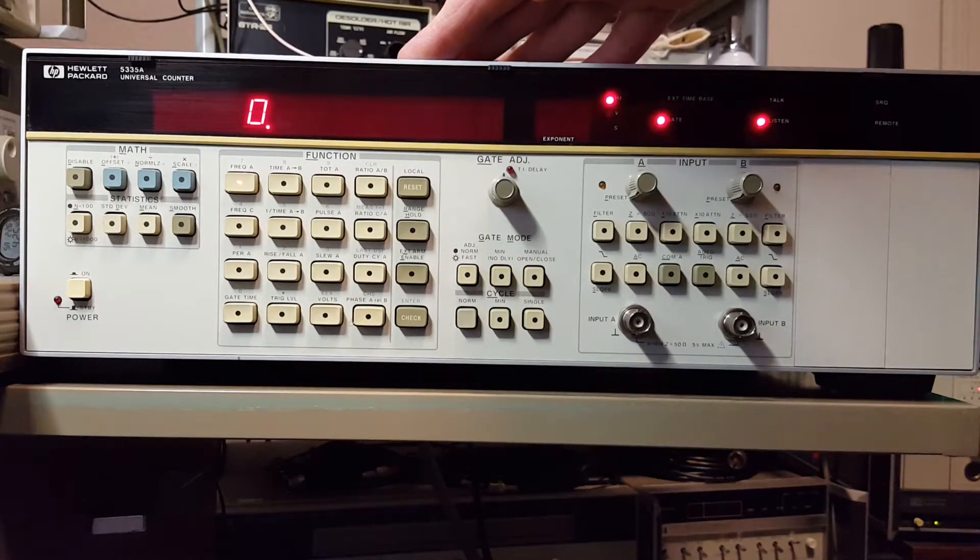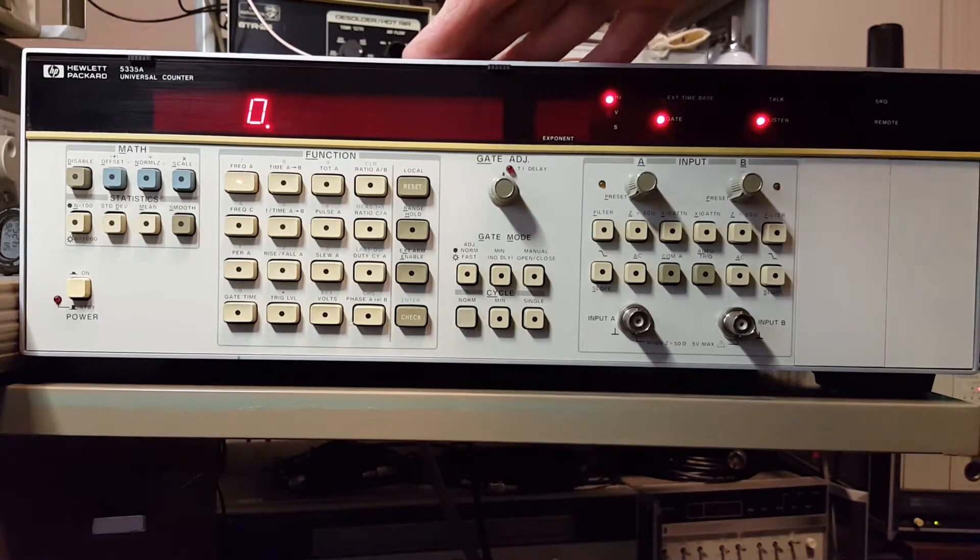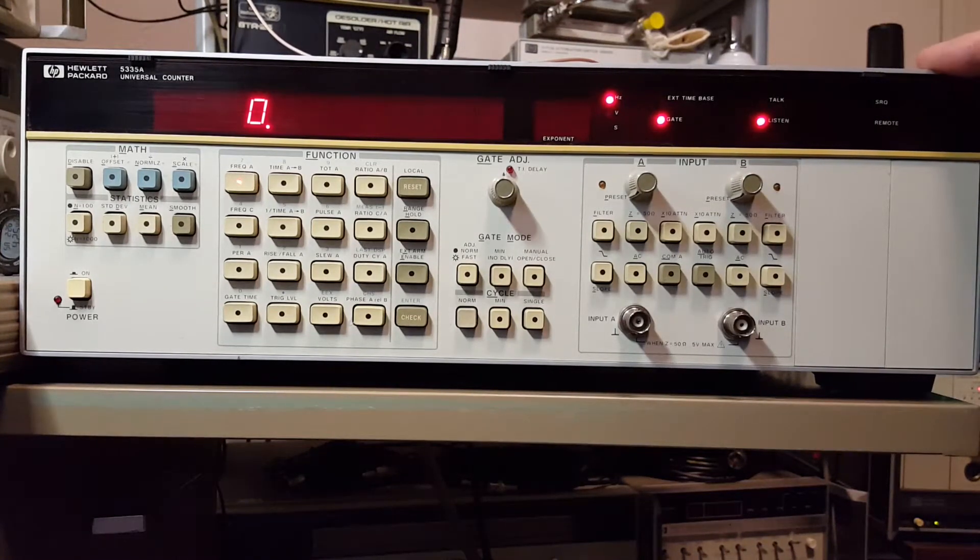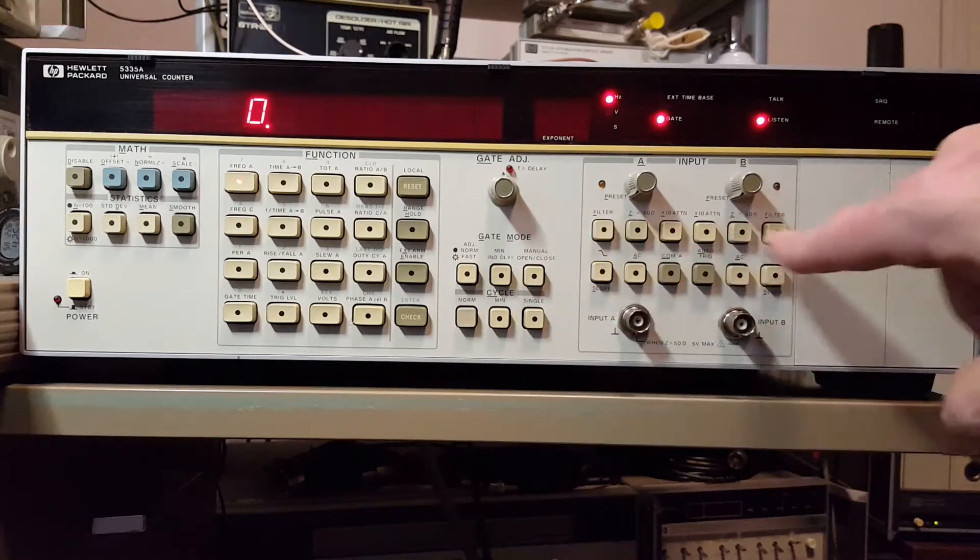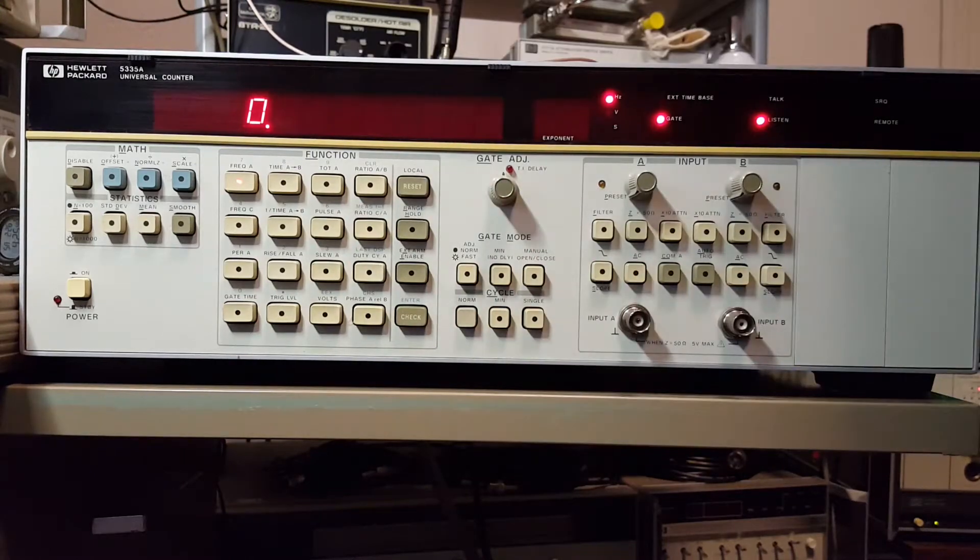This counter came with option 40, which gives me the expanded HP IB command set. It allows me to mess with all these buttons. I mean, every button on here I can control via HP IB. And, like I said, I added the high-stability option.